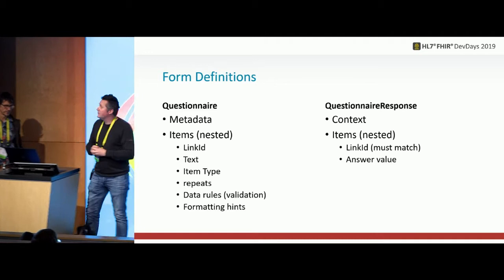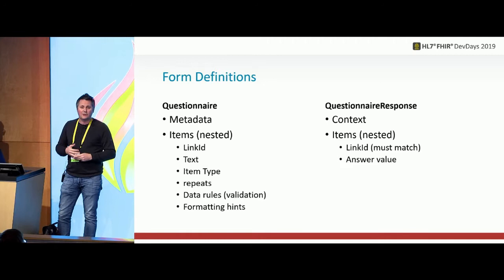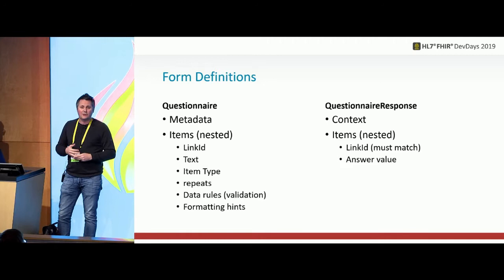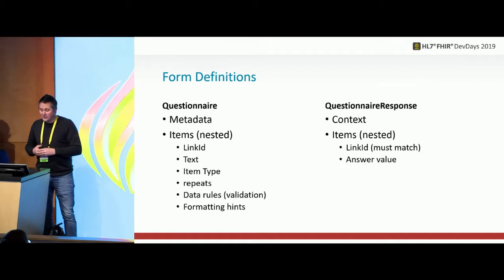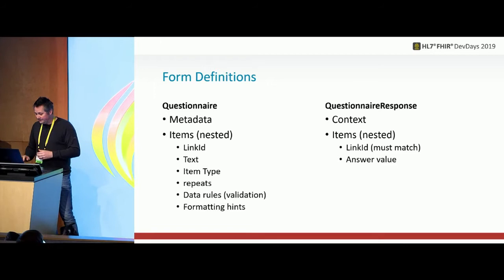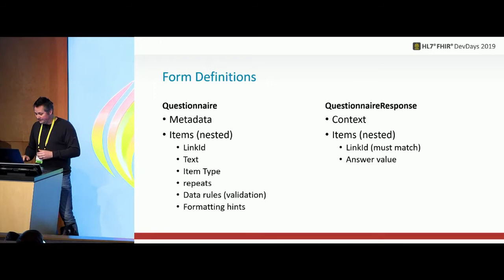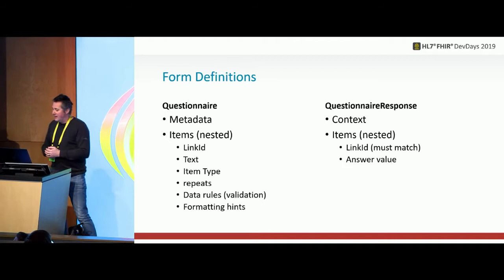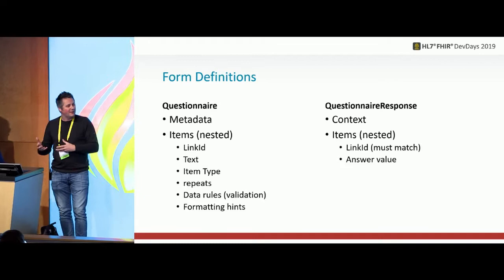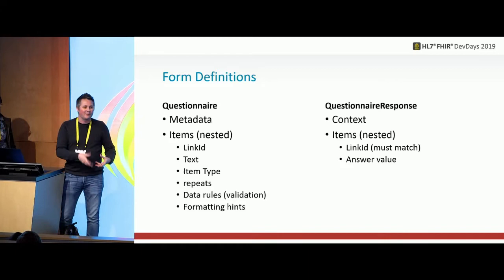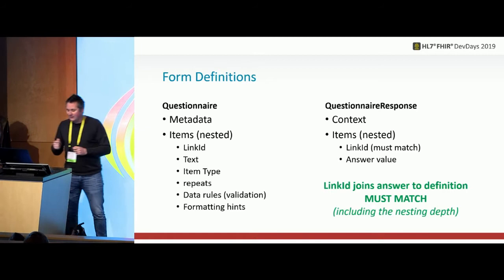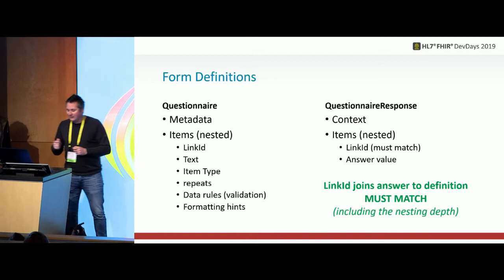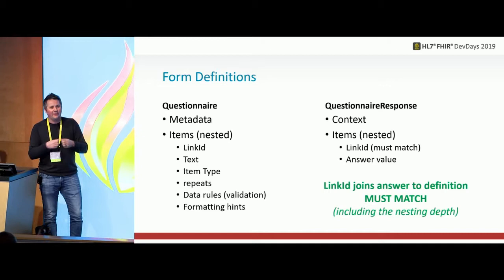In the Questionnaire resource itself, we've got a whole set of metadata — who created it, what it's for, versioning, the context in which it should be used, and then a whole bunch of items, which are the actual questions and groups — the meat of the questionnaire. Among those items are link ID, type, and sub-items. On the questionnaire response side is the context — if it's a patient assessment it would be the patient, a group assessment might be attached to a group, a satisfaction survey for a practitioner would have a practitioner context. Items are nested, and the link ID is the connection between the questionnaire and the questionnaire response so you can match things up. They have to match so validation and everything else works as you flow forward.